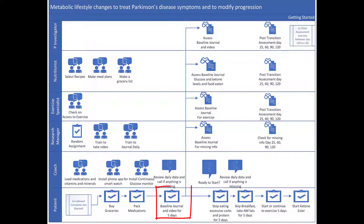However, they don't make any of the changes to diet or exercise or fasting overnight. They just do what they normally would do for the first five days. This gives us a baseline. Once the baseline information is captured, the participant stops eating excessive carbs and excessive protein for five days.